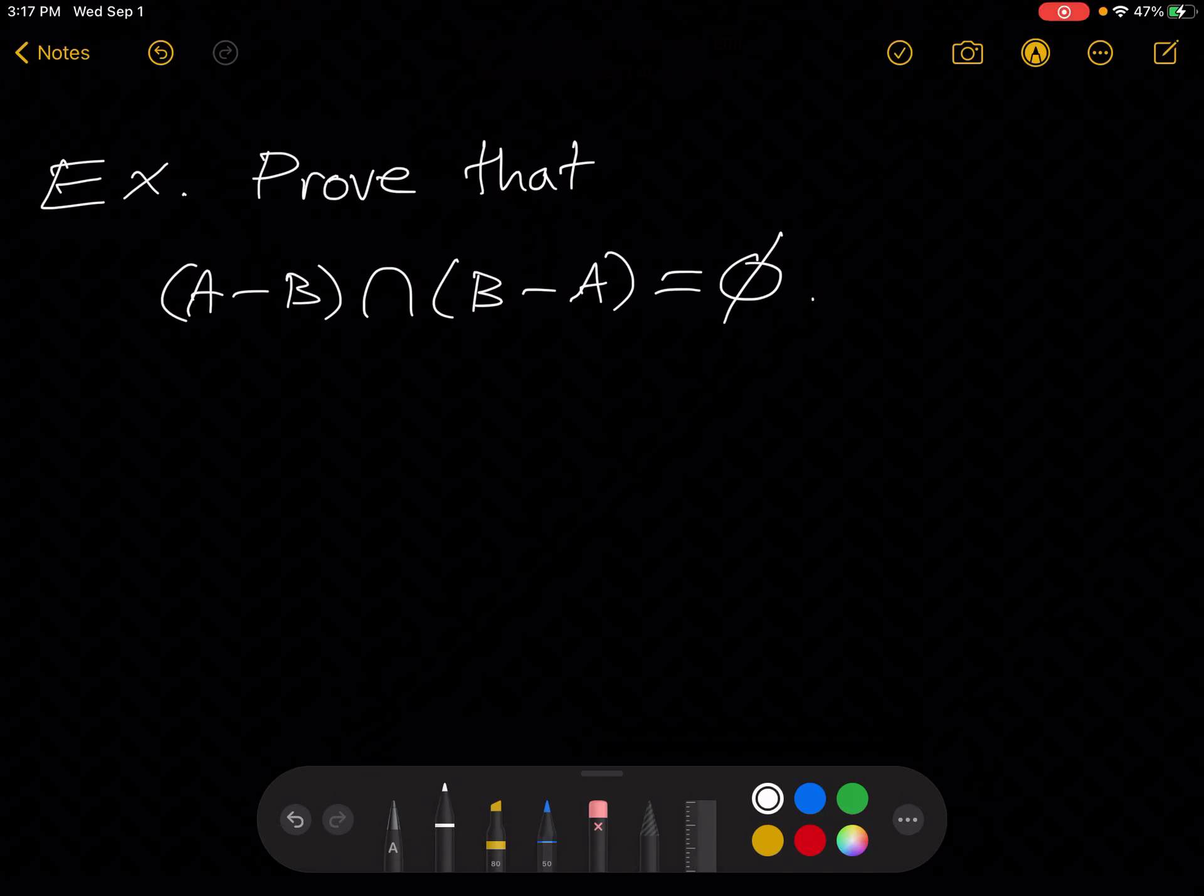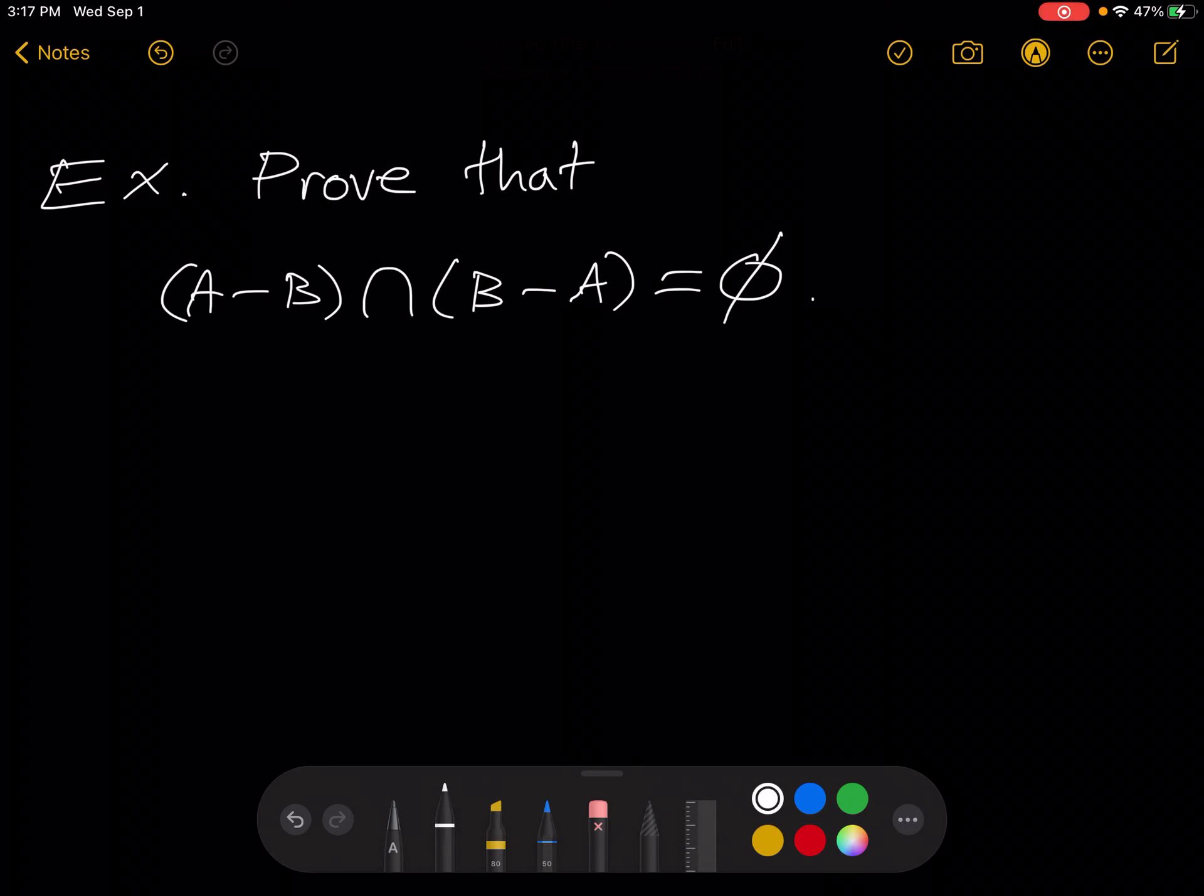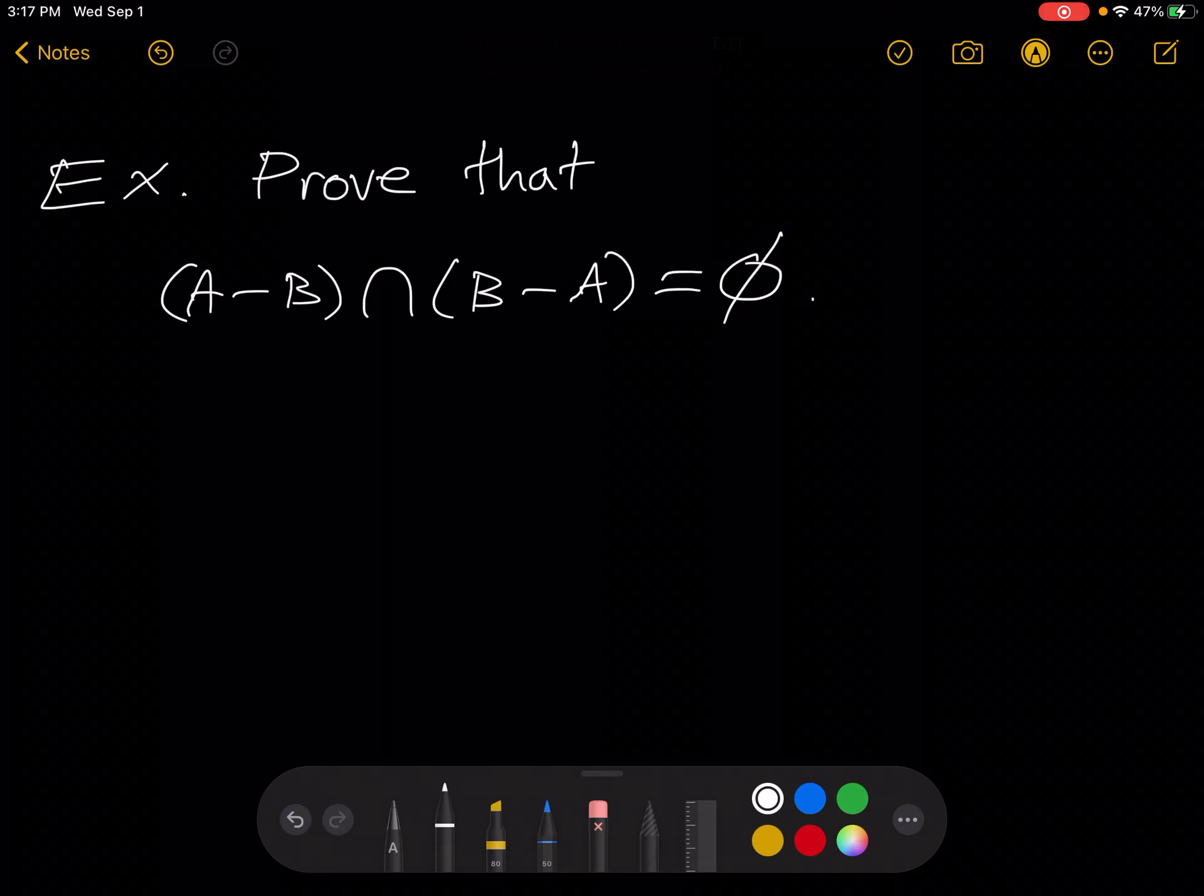In this one, I'm going to prove that the intersection of A minus B and B minus A is the empty set, meaning that they have nothing in common.